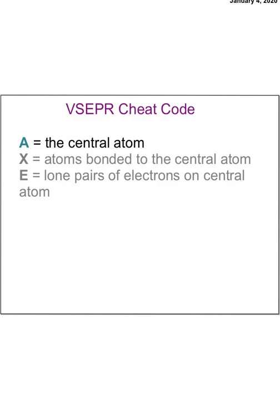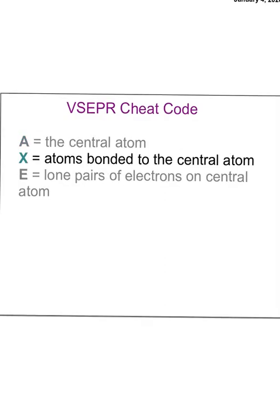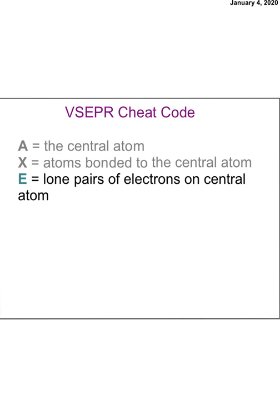First, I draw my Lewis structure, and then I write the code based off the drawing. In my code, A represents the central atom. Any X represents the atoms that are directly bonded to the central atom. An E represents any lone pairs of electrons drawn on the central atom. We're focusing on that central atom — not lone pairs on the outer atoms, just the central atom.